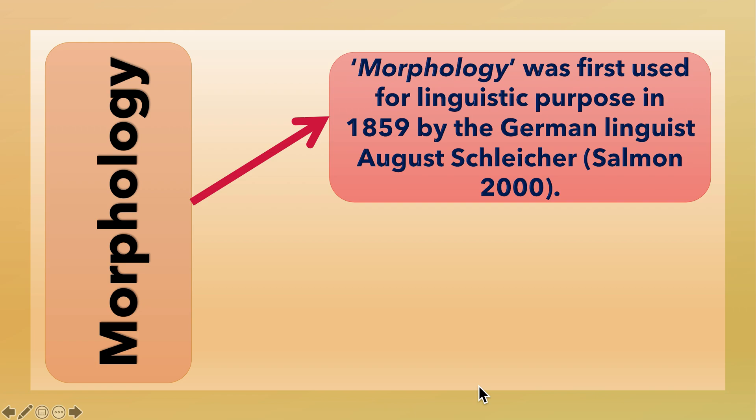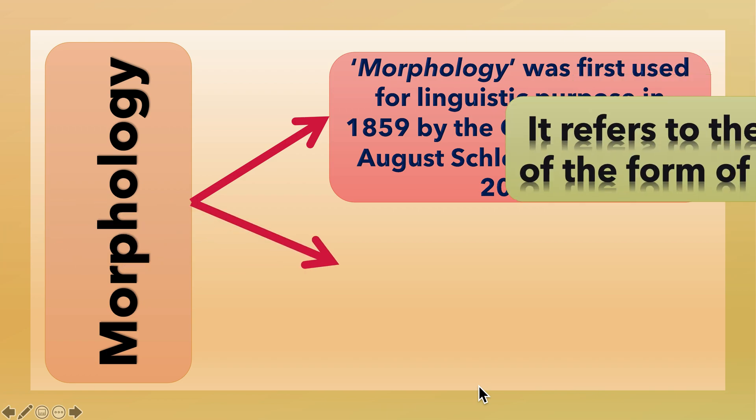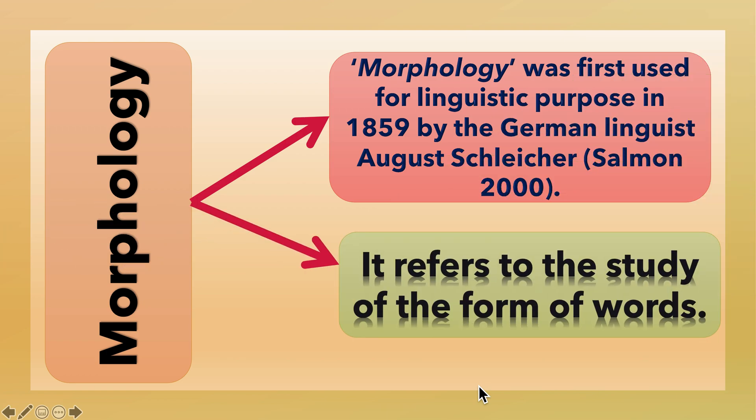Morphology was first used for linguistic purposes in 1859 by the German linguist August Schleicher. It refers to the study of the form of words.